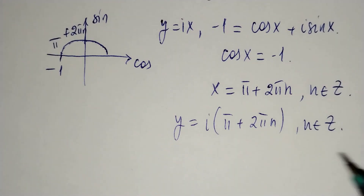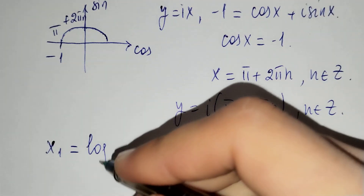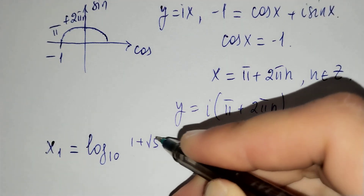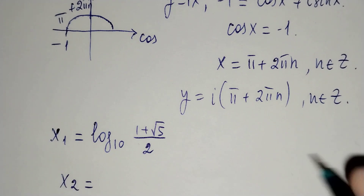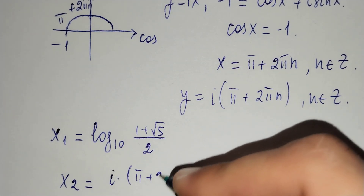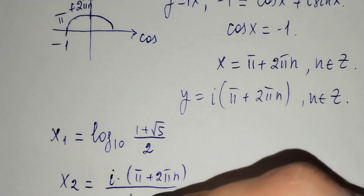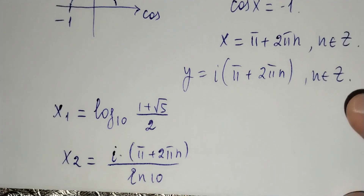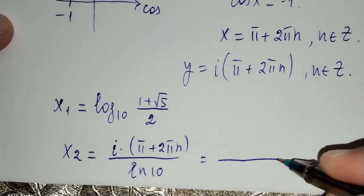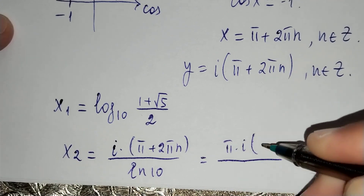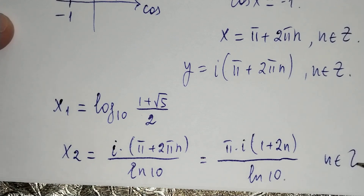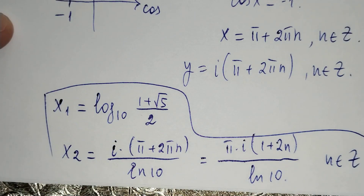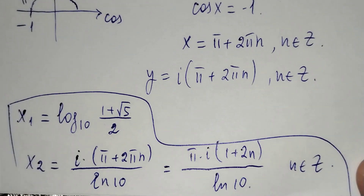Our final answers are: x₁ equals to log base 10 of 1 plus square root of 5, over 2, and x₂ equals to i times pi plus 2 pi n, over ln 10 — or written as pi times i times 1 plus 2n, over ln 10, where n belongs to integers. Thanks for watching! Don't forget to subscribe to my channel and thumbs up my video.